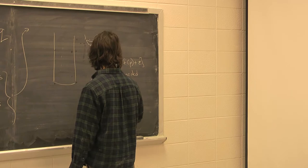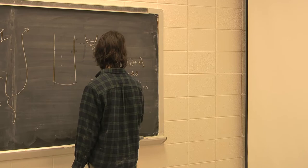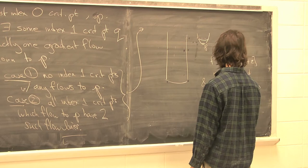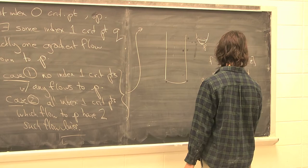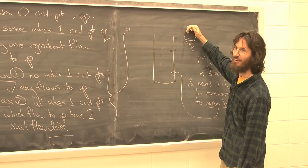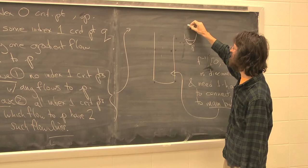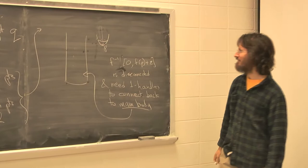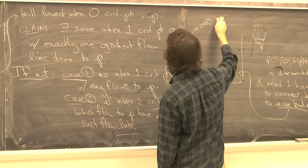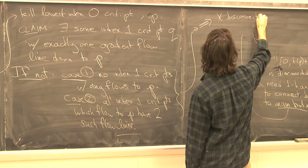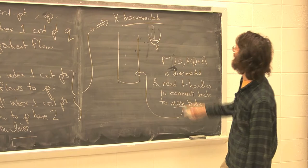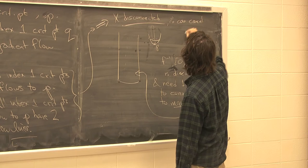So you need 1-handles to connect back to the main mass. If there are no 1-handles that connect at all, or if every 1-handle connects twice at this component, it won't connect it either. Therefore, by contradiction, there exists a canceling index-1 critical point, and therefore you can cancel the index-0 critical points one by one.